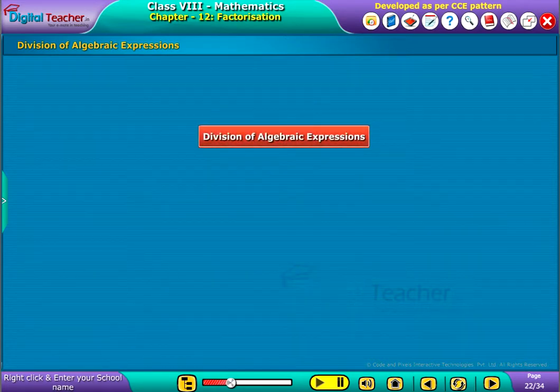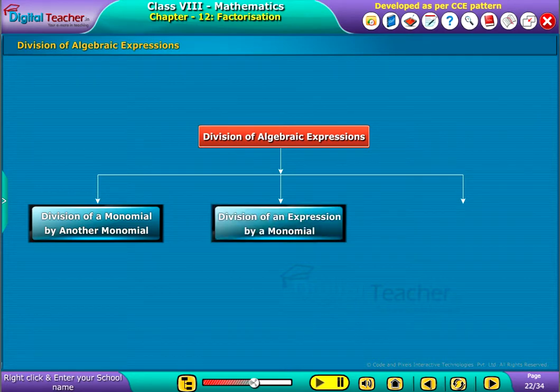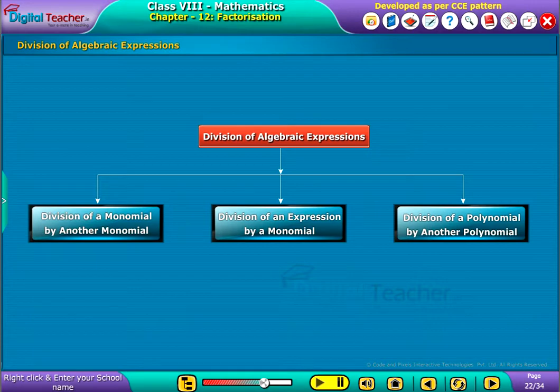The division of algebraic expressions is of the following types: division of a monomial by another monomial, division of an expression by a monomial, and division of a polynomial by another polynomial.